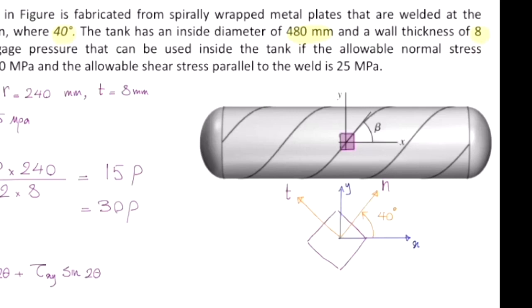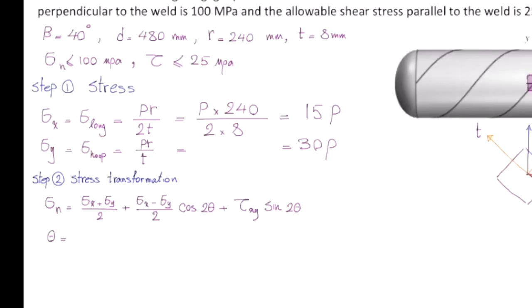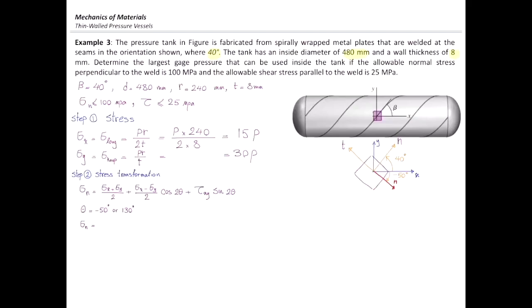For the t direction, theta would be 90 + 40 = 130 degrees, or equivalently negative 50 degrees. Both options work. I'll use negative 50 degrees.